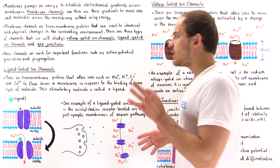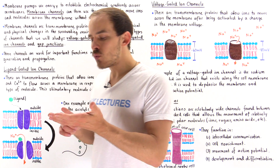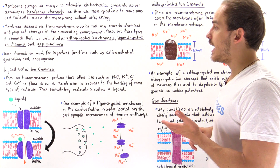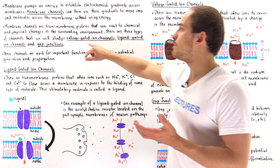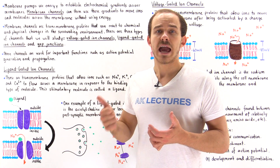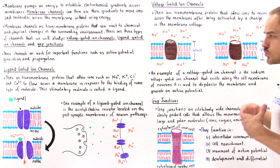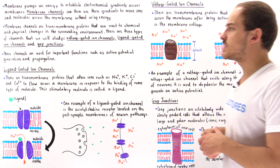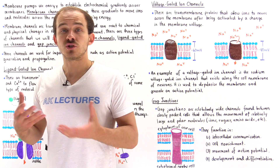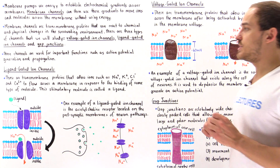We're going to focus on three different types of membrane channels: ligand-gated ion channels, voltage-gated ion channels, and gap junctions. In this lecture, we'll introduce these three different types of channels, and in the following lectures we'll focus on the details of each one.